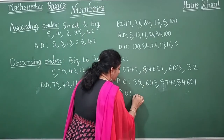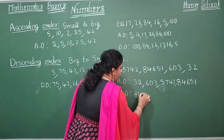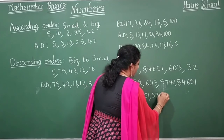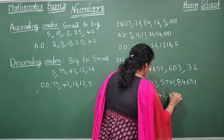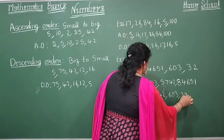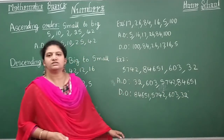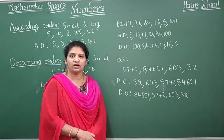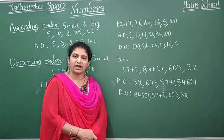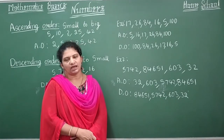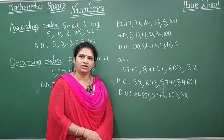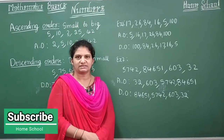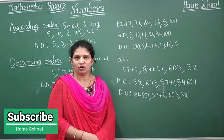Now for descending order, the five-digit number 84651 comes first, then the four-digit number 5742, then the three-digit number, and finally the two-digit number 32. Children, this is the way we arrange numbers — we check the number of digits first, compare them, and then arrange in ascending or descending order. I hope you are all enjoying these basics classes. Thank you all. Please subscribe.